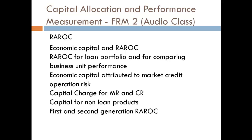The confidence level at which economic capital is set can be viewed as the probability that the firm will be able to absorb losses over the risk period. For example, if a bank sets its economic capital at a 95% confidence level, there is a 95% chance that actual losses will be less than the economic capital, and only a 5% chance that losses will exceed it.